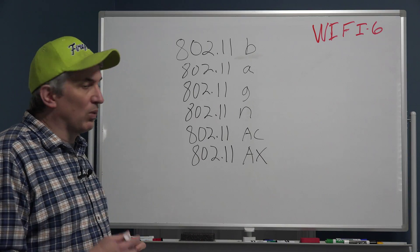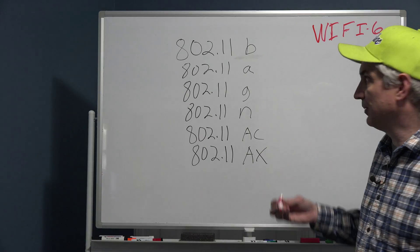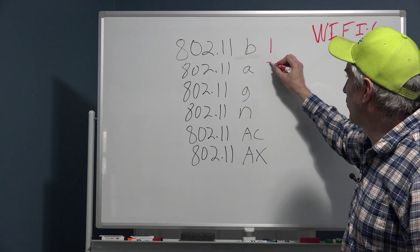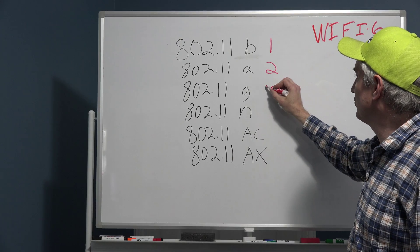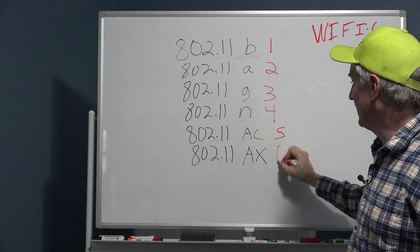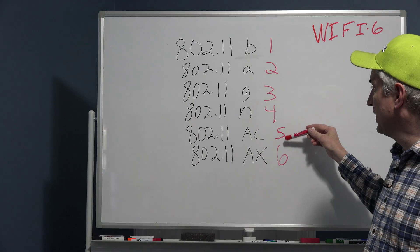This is where WiFi 6 comes from. This is considered WiFi 1, this is WiFi 2, this is WiFi 3, 4, 5, and 6. So that's where the numbers come from.